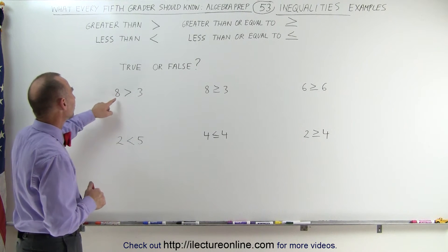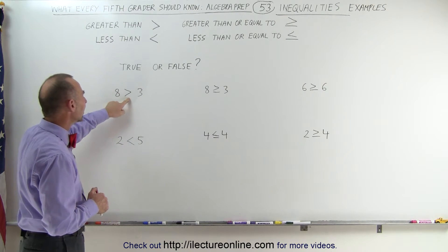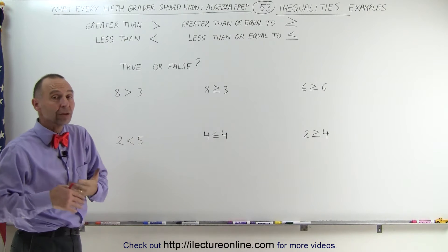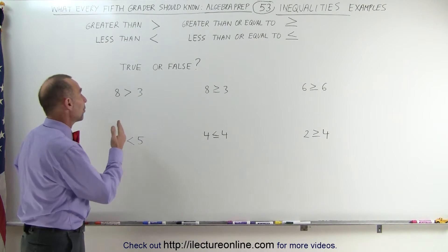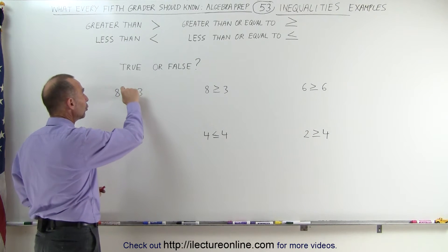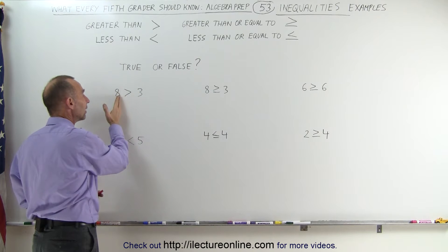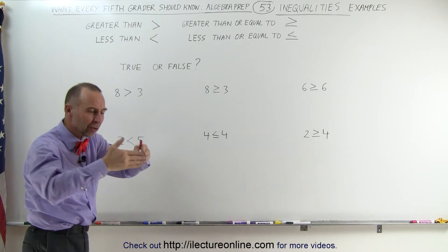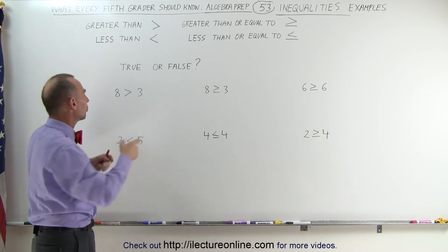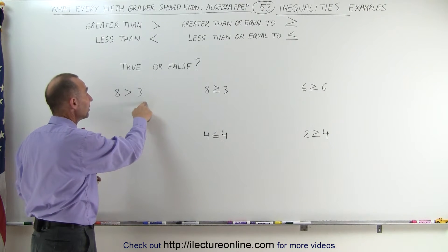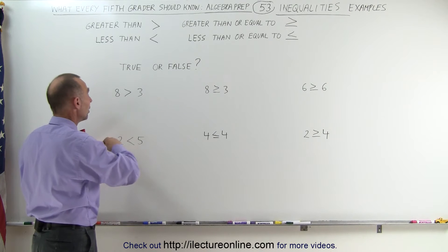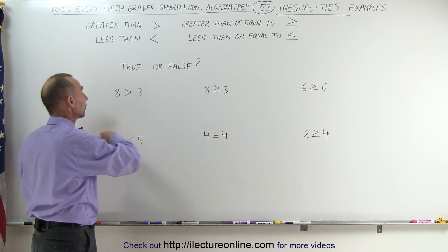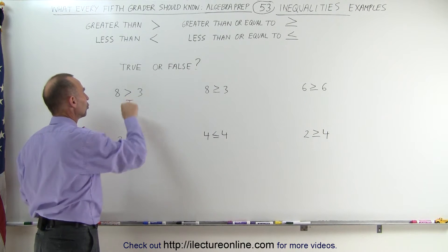For example, here we have the number 8 greater than 3, and they ask us, is that true or false? We have to remember that when we see this symbol, the open side of the symbol means greater than, the pointy part of the symbol means less than. It comes together to a smaller number, and it opens up to a greater number. Is this a true statement? The answer is yes, it's true, because 8 is indeed greater than 3. So this makes that a true statement.